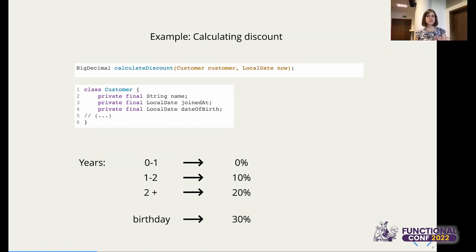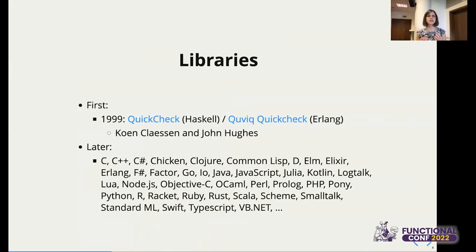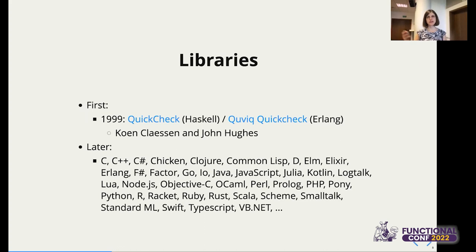So those are four properties we could define for our domain. Now let's see one of them in the code. But before we move to code, let me say a bit about libraries. Property-based testing has been with us for over 20 years — it started with implementations in Haskell and Erlang, and since then many libraries have followed.